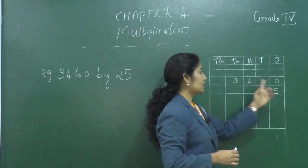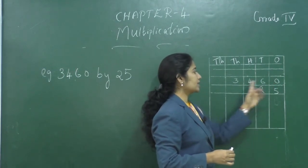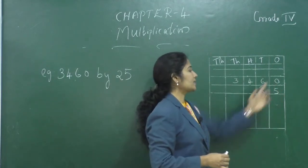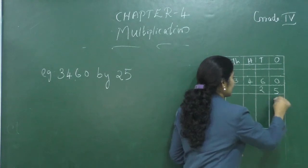First, we have to multiply 5 with all the digits of the multiplicand and 2 with all the digits of the multiplicand and find their sum. So, what is 5 into 0? Yes, 0. We can write at the 1's place.